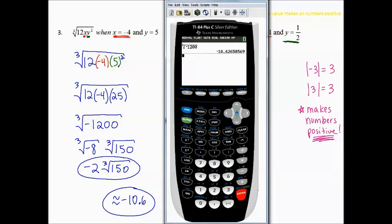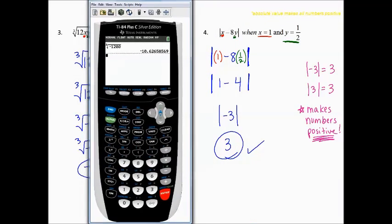Let's double check by using our calculator and learn where the absolute value symbols are. First, let's store 1 for x and 1/2 for y. Alpha, y equals to get a fraction, enter, 1 over 2, and store alpha y. There it is. Now let's find absolute values. That's in math, over to number, absolute value is the first one. Abs, there it is.